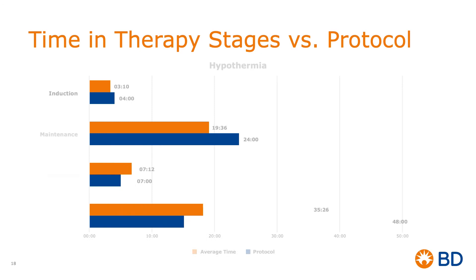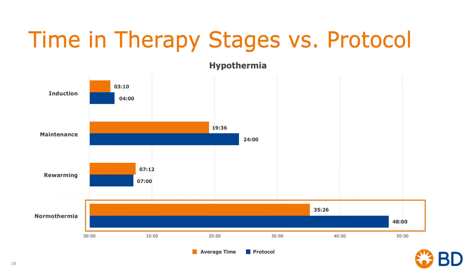Let's revisit my customer and look at an example of how to use reports to improve process. When this customer started using analytics in August of 2019, the data showed TTM therapy was being stopped prematurely. Hospital physicians wanted patients to get at least 48 hours of normothermia after hypothermia therapy, and that was not being delivered. The hospital made their policy more clear, expanded their fleet of Arctic Sun devices, and stressed the importance of following the policy during continuing education.